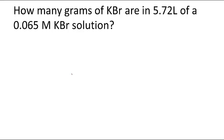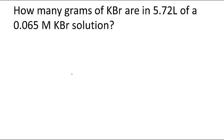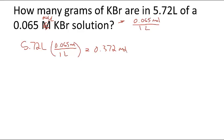Let's go the other way, or all the way through. How many grams of KBr are in 5.72 liters of a 0.065 moles per liter KBr solution? I know I have a volume, I have 5.72 liters. I know for every liter, 0.065 moles per one liter. For every liter I have 0.065 moles. If I have 5.72 liters, that's 1 liter with 0.065 moles. If I do that math out, I get 5.72 times 0.065, and I get 0.372 moles. That's how many moles of KBr are in that solution.